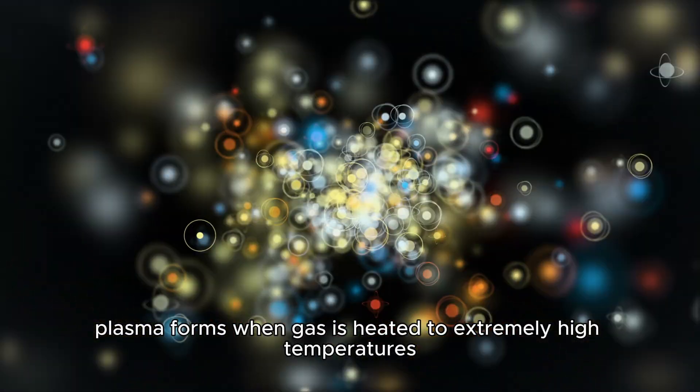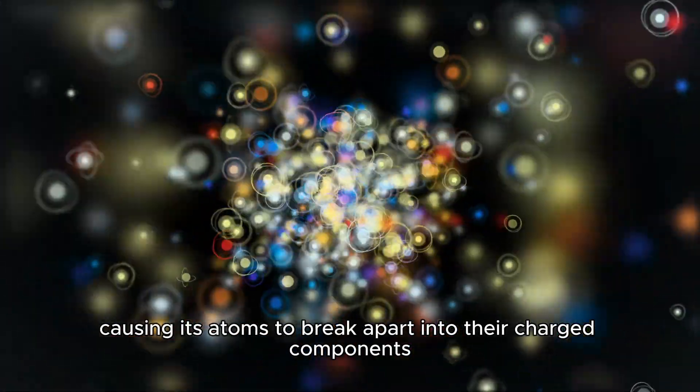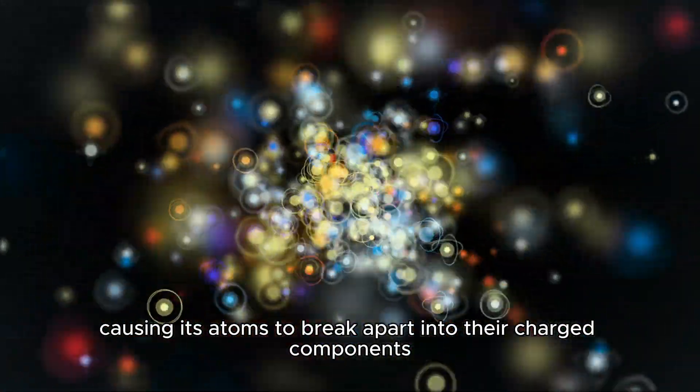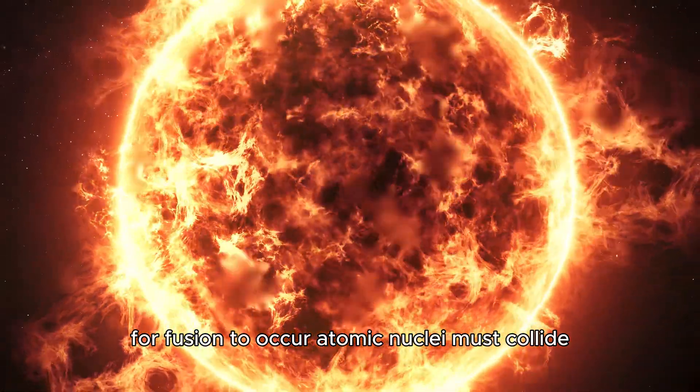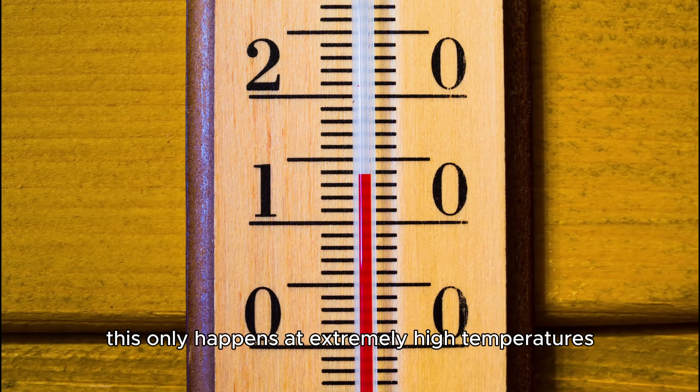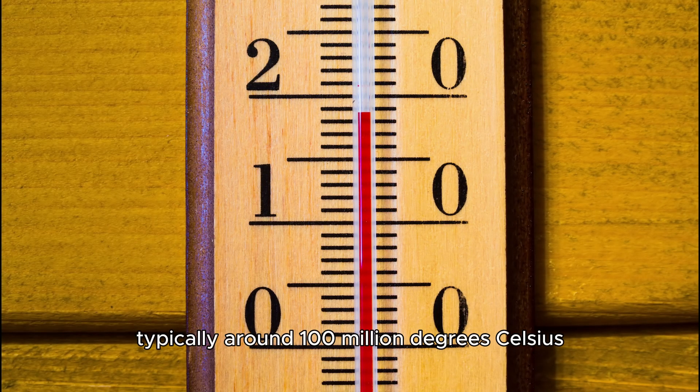Plasma forms when gas is heated to extremely high temperatures, causing its atoms to break apart into their charged components. For fusion to occur, atomic nuclei must collide at high enough speeds to overcome their natural repulsion. This only happens at extremely high temperatures, typically around 100 million degrees Celsius.